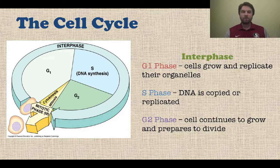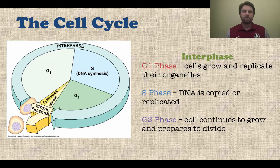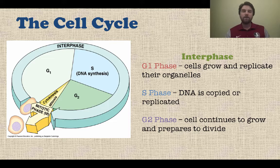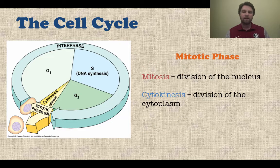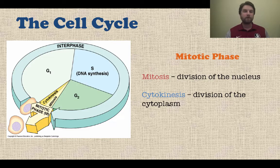Interphase is made up of three parts. The G1 phase, sometimes called growth one or gap one phase, is when cells grow, replicate their organelles, and carry out normal cell functions. The cell is in the G1 phase for a very long time. Then comes the S phase, right after G1 — that's when DNA is copied or replicated. And then G2 phase, when the cell continues to grow and is starting to prepare to divide. That leads into the mitotic phase, or M phase, which contains mitosis — division of the cell's nucleus — and cytokinesis, which is the division of its cytoplasm. That whole M phase is actually when the cell divides.